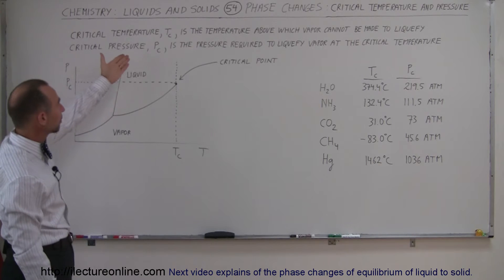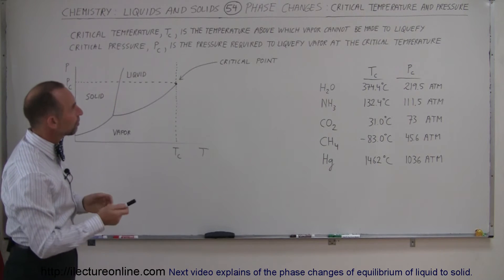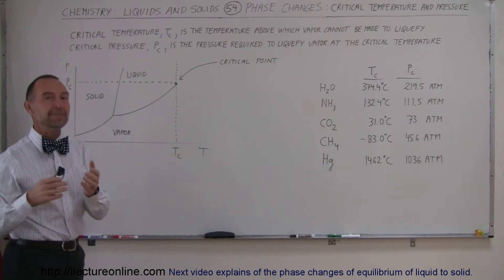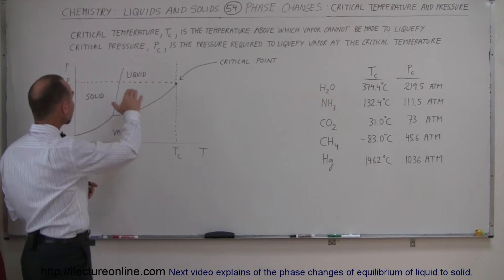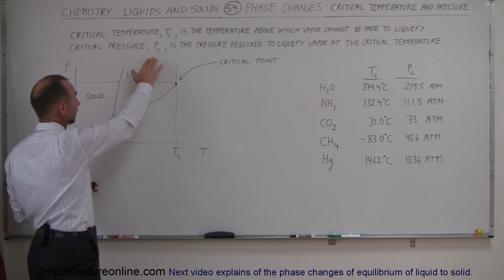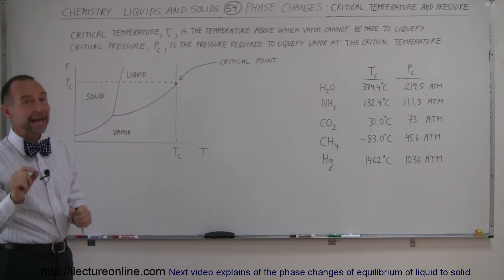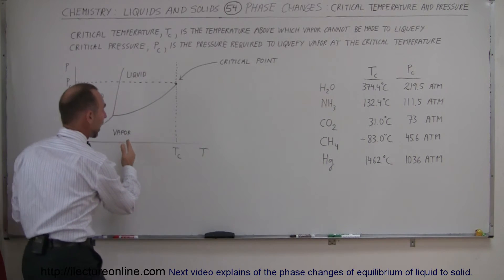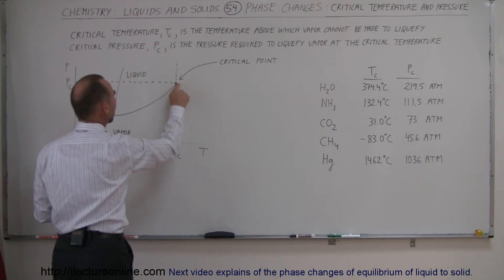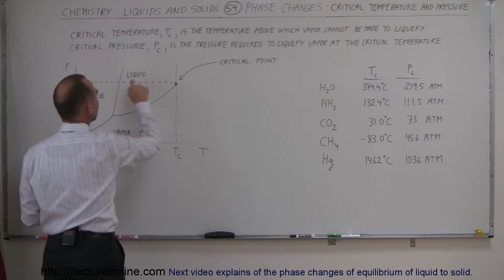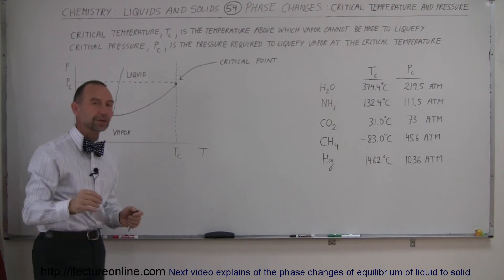So a good definition, critical temperature, T sub C, is the temperature above which vapor cannot be made to liquefy, regardless of the amount of pressure you try to apply. And the critical pressure, P sub C, is the pressure required to liquefy the vapor at the critical point. So when you get to the highest temperature where you can still turn vapor into a liquid, the pressure required to do so will then be called the critical pressure.